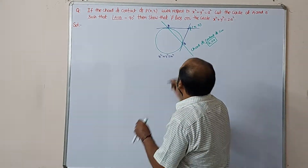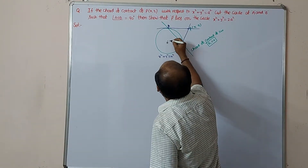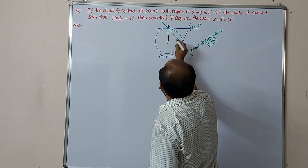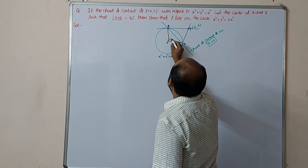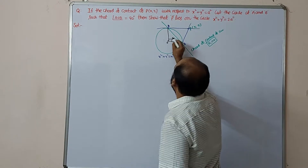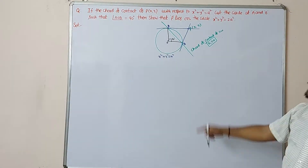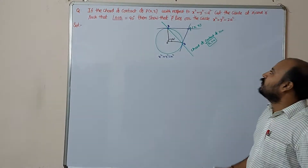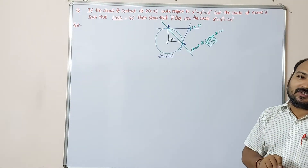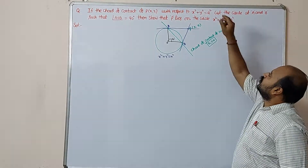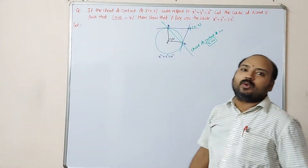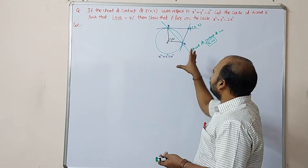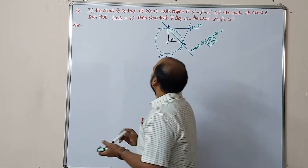Here, O is the center, and the chord is making an angle of 90 degrees at O. That is the condition given. We have to find the locus, and we need to prove that locus is x² + y² = 2a².